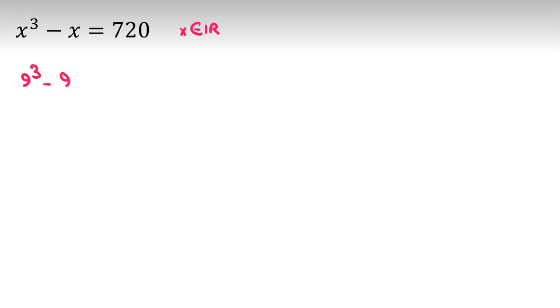Because 9 cubed minus 9 is what? 729 minus 9, which is 720. So, x equal to 9 works.